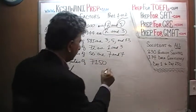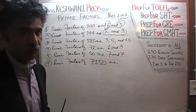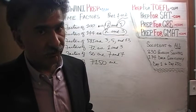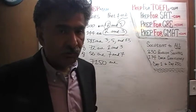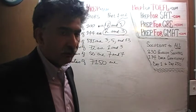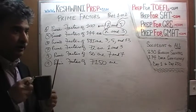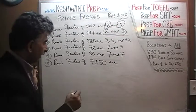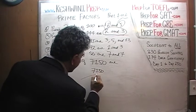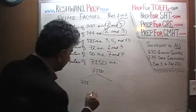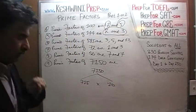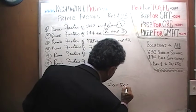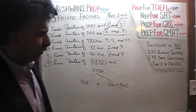Prime factors of 7,150. I really do want you to pause the video at this point and try this yourself — you'll always get more out of it that way. The trick here is to realize that 7,150 can be written as 715 times 10. That was the trick. The prime factors of 10 are just 5 and 2. Now we just take care of 715.